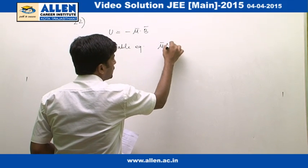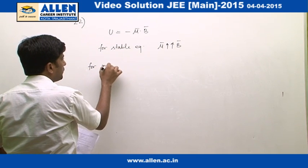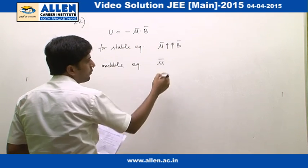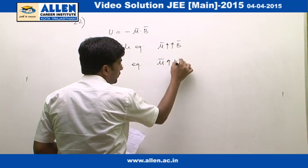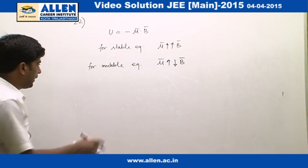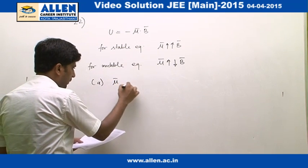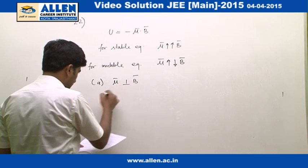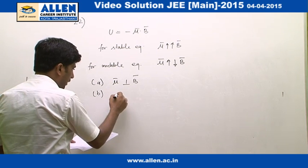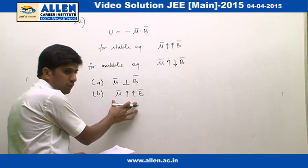mu vector must be parallel to vector B. And for unstable equilibrium, mu vector must be opposite to the direction of vector B. In the four options given A, B, C, D, in option A, vector mu is perpendicular to the vector B. In option B it is parallel to the vector B, therefore it is the case of stable equilibrium.